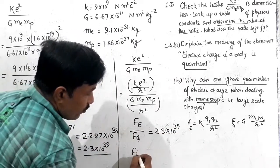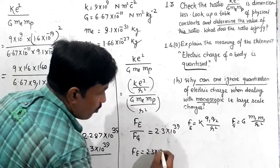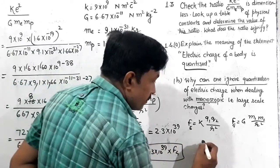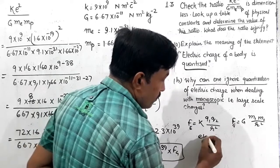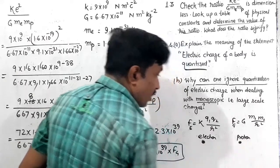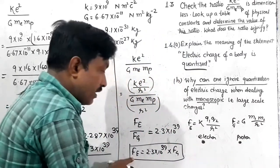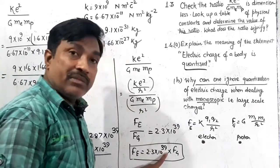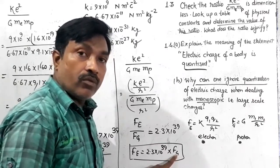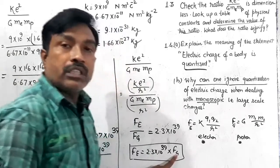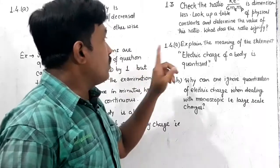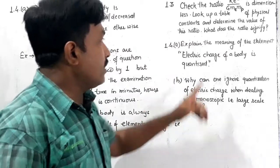So this ratio equals electric force divided by gravitational force. We previously solved this to be 2.3×10³⁹. This means Fe = 2.3×10³⁹ × Fg. In other words, the electrostatic force between an electron and a proton is 10³⁹ times greater than the gravitational force between them. This shows that electric force is much stronger than gravitational force.